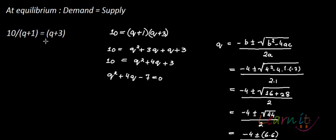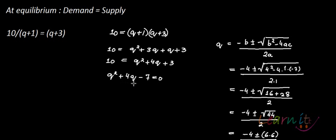You equate demand equals supply, so 10/(Q+1) = Q+3, which gives 10 = (Q+1)(Q+3). Expanding and rearranging, you will get Q² + 4Q - 7.